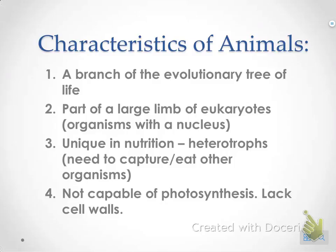There are a few characteristics of animals that make them different from other living things. First of all, they're a branch on the evolutionary tree of life, and they're also part of a large limb of eukaryotes. Eukaryotes have a nucleus. Animals are unique in nutrition — they're all heterotrophs, which means they don't make their own food. They have to capture their food or eat other organisms. They're not capable of photosynthesis, and they lack a cell wall.